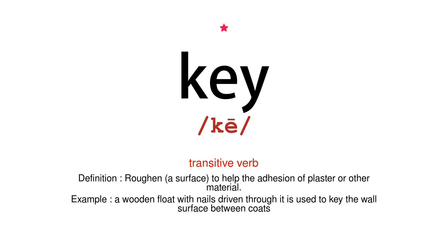Transitive verb. Definition: roughen a surface to help the adhesion of plaster or other material. Example: a wooden float with nails driven through it is used to key the wall surface between coats.